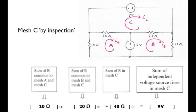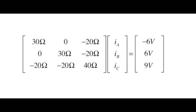And then this screen shows the algorithm for mesh C. The term I sub C is multiplied by the sum of the resistance in mesh C. And the other mesh currents are multiplied by the shared resistance with mesh C, with a minus sign. Again, we have the sum of voltage rises on the right-hand side. So for mesh C, it is minus 20 ohms times IA, minus 20 ohms times IB, plus 40 ohms times IC, all equal to 9 volts. So we end up with the same matrix equation as before. Now with a little practice, you can look at a circuit like this and write such a matrix equation by inspection, and it's expandable to any number of meshes.